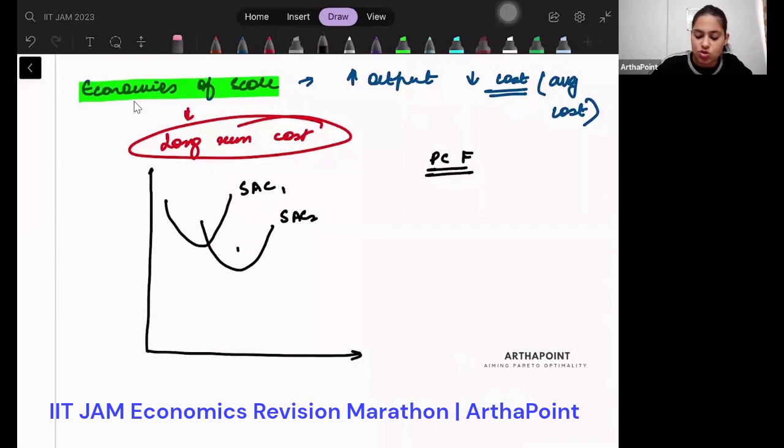SAC 1, SAC 2, SAC 3, SAC 4, SAC 5, and so on. These short run cost functions were drawn for different level of capital because capital was fixed.